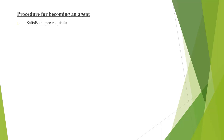Second, that person must have passed the 10th exam or 12th exam. If the person who wants to act as an agent is residing in an area where the population is up to 5,000 as per the last census, then the educational qualification required is 10th pass. But if the population of that area is more than 5,000, then that person must be 12th pass.